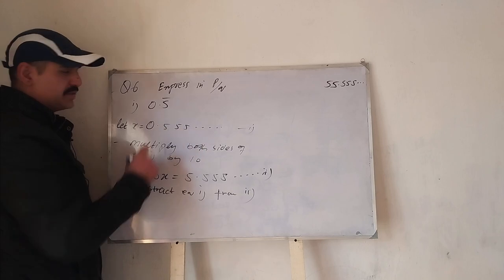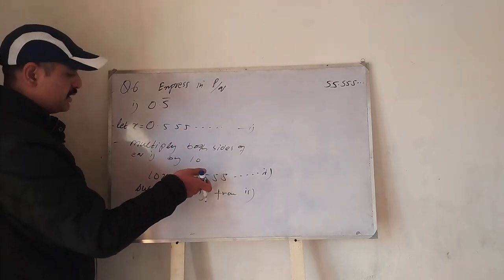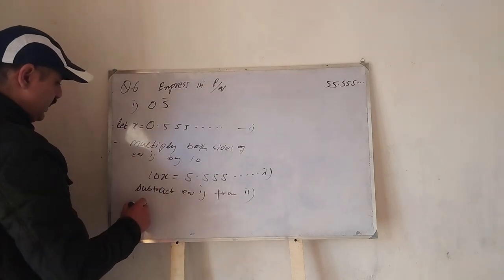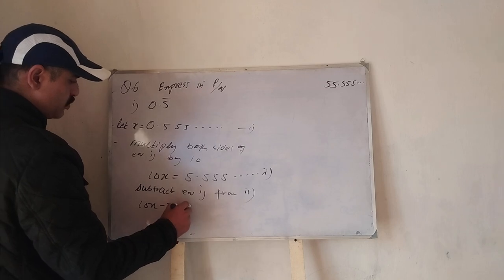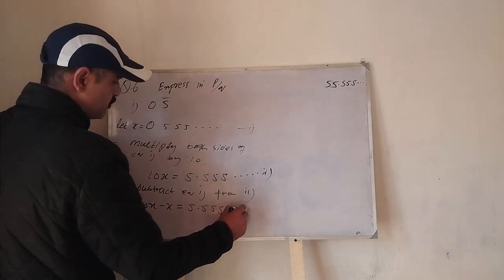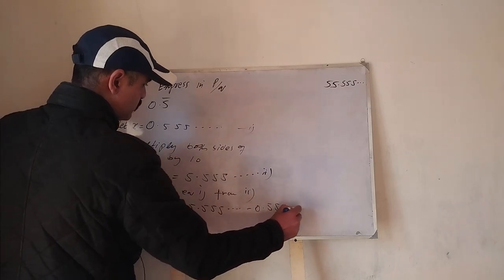So 10x minus x is equal to 5.555 and so on minus 0.555 and so on. This becomes 9x.